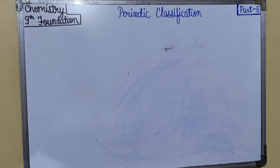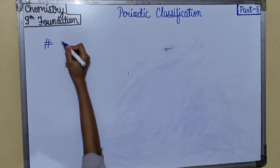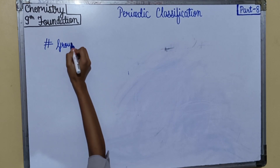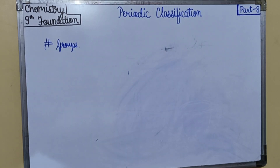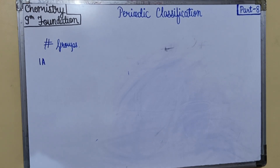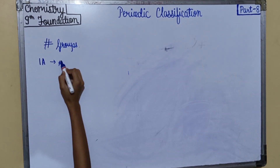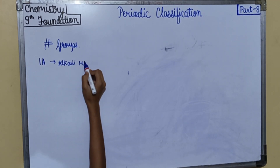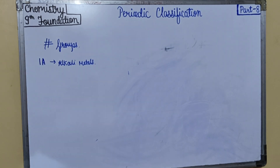Let us start. Our topic is groups. Group number 1A represents alkali metals, which means due to the formation of strong oxides and hydroxides with a strong alkaline character, which means basic in nature.